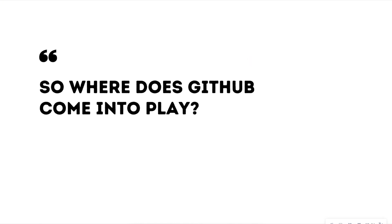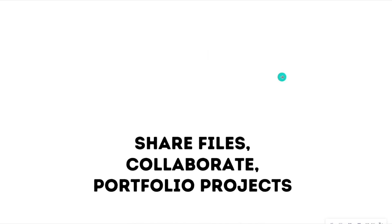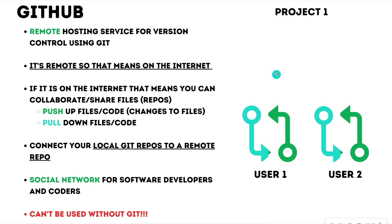So where does GitHub come into play? Git helps us with version control — instead of having five different versions of the same file, we keep the most recent version and store all the other versions in a folder we can call back later. But GitHub comes into play when we want to actually share files and collaborate on projects. GitHub is a remote hosting service that uses Git, hence the name GitHub. You can't use GitHub without using Git, but you can use Git without using GitHub.